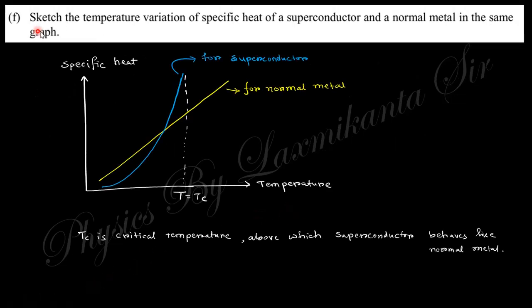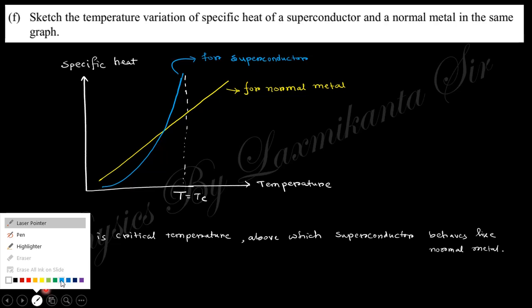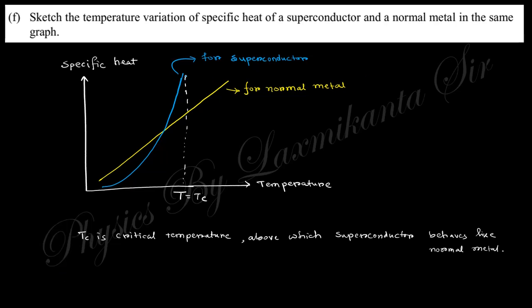Next question: sketch the temperature variation of specific heat of superconductor and normal metal in the same graph. In case of the specific heat versus temperature versus specific heat graph, for normal metal this will be like that. For superconductor, this will be like that. After T greater than Tc, this becomes the same as the normal metal. If you just draw this curve, in case of superconductor after this, this will follow up this path. So this is for superconducting material and this is for normal metal. Above T greater than Tc, the superconductor behaves like a normal metal.